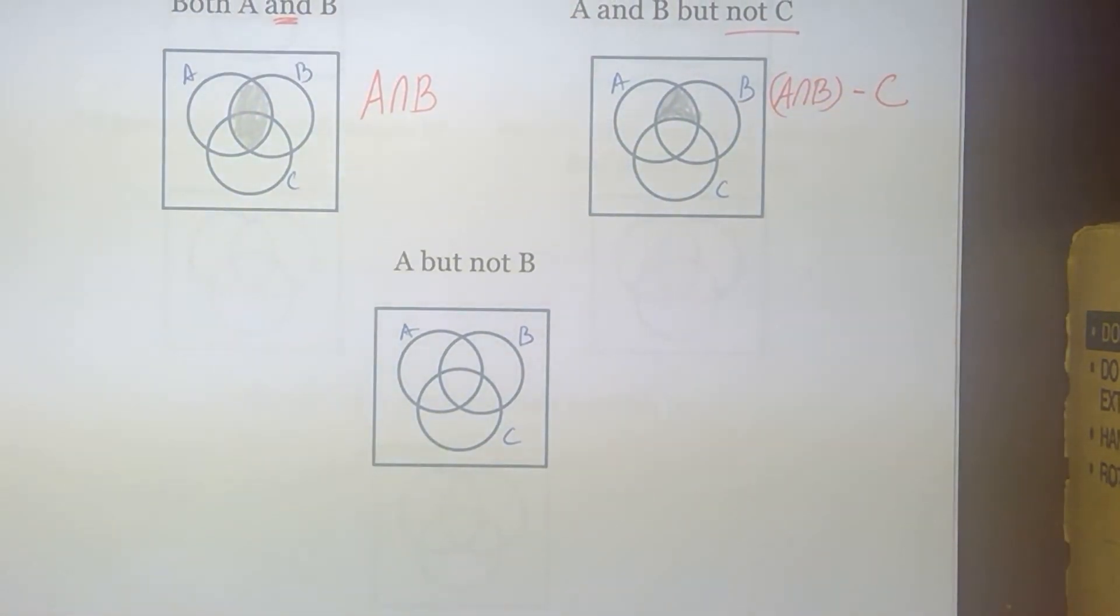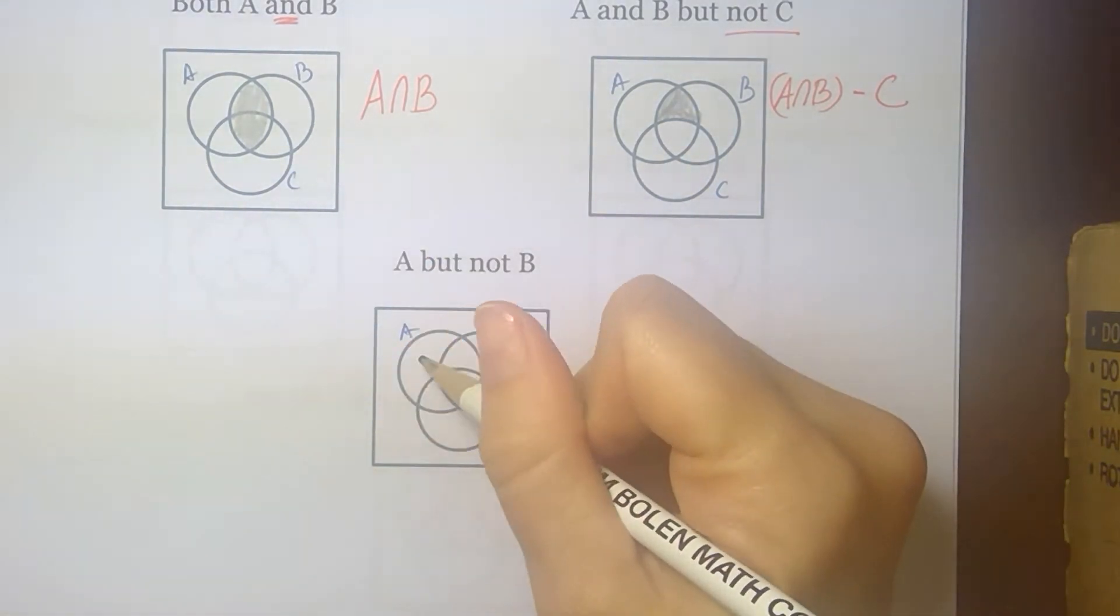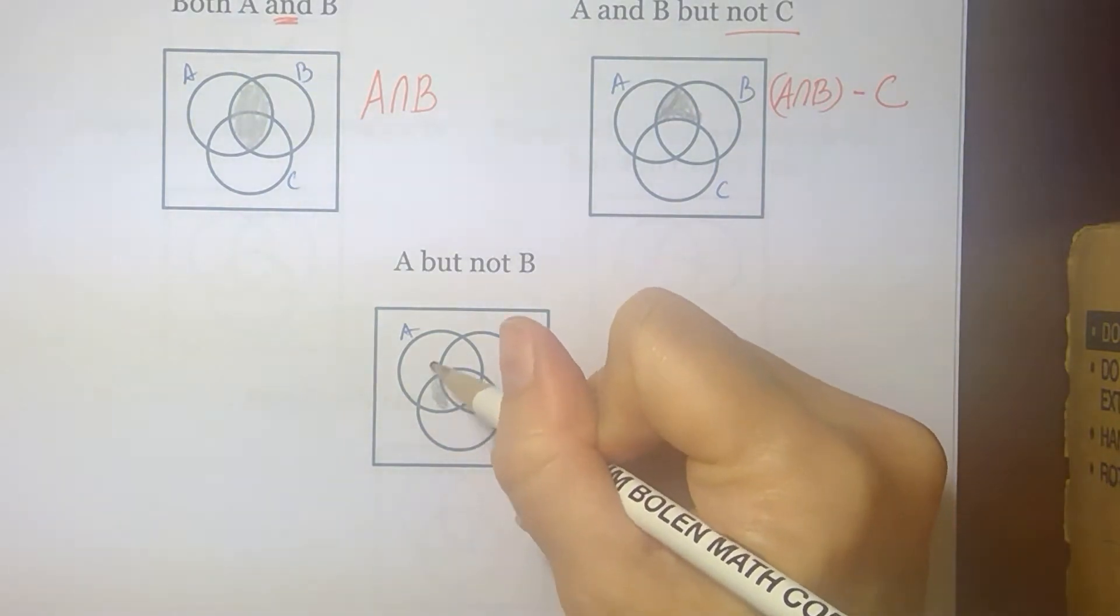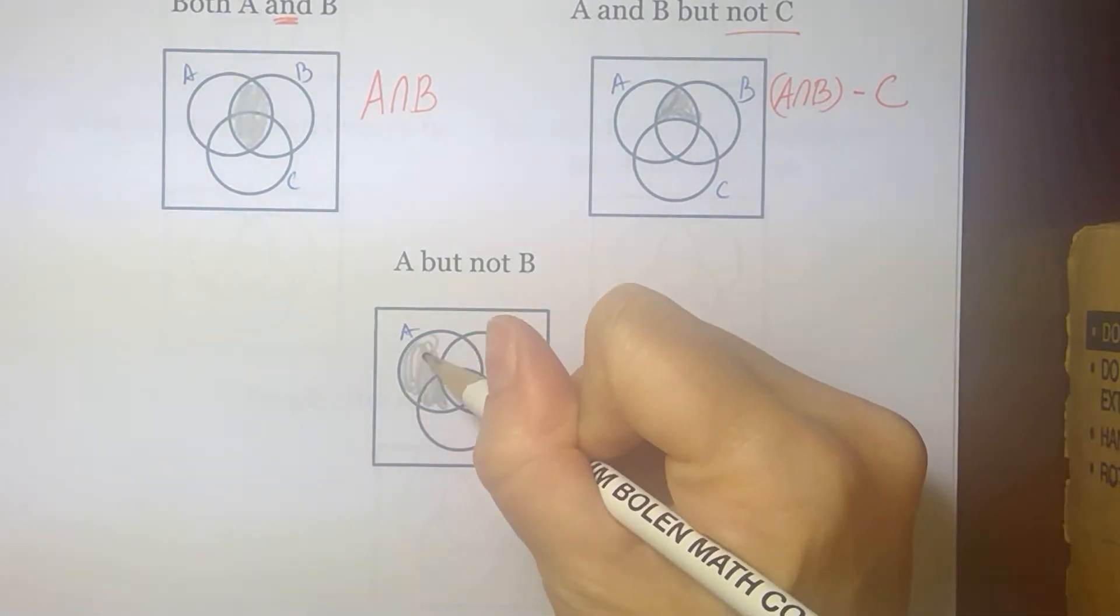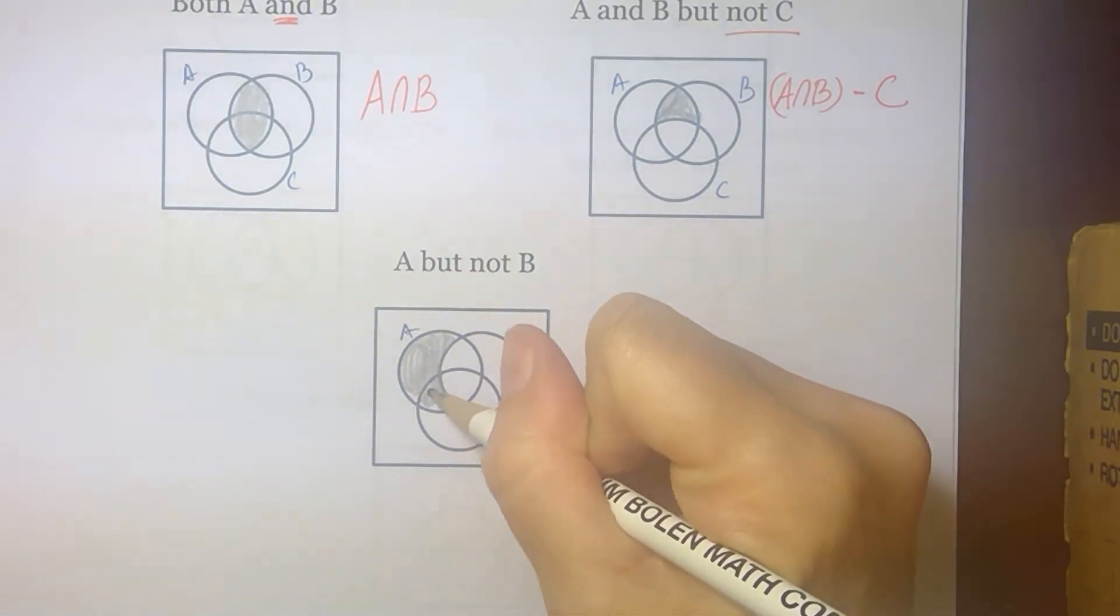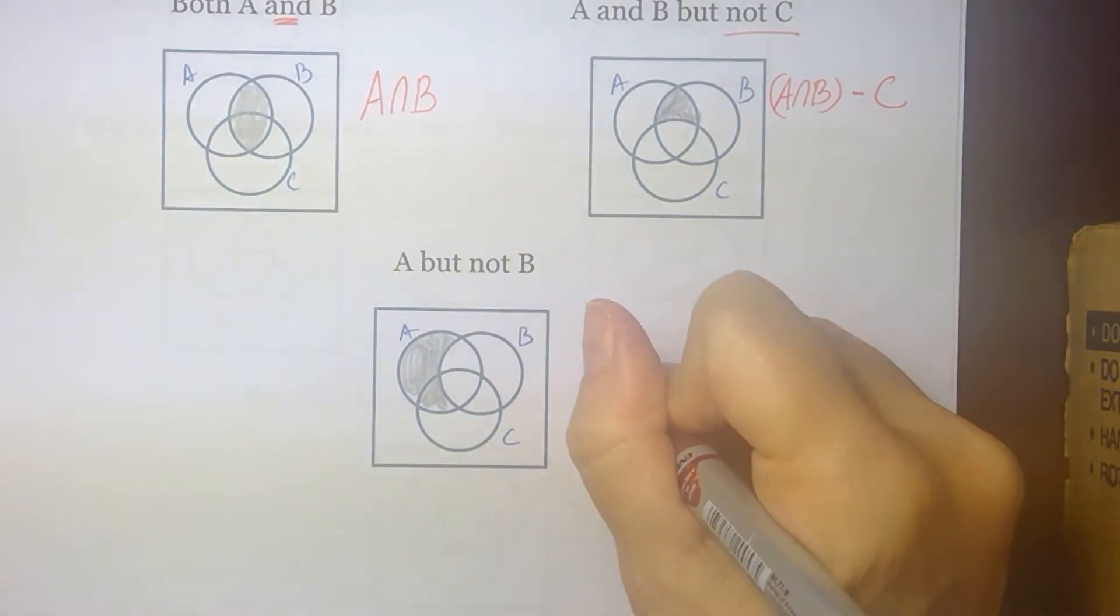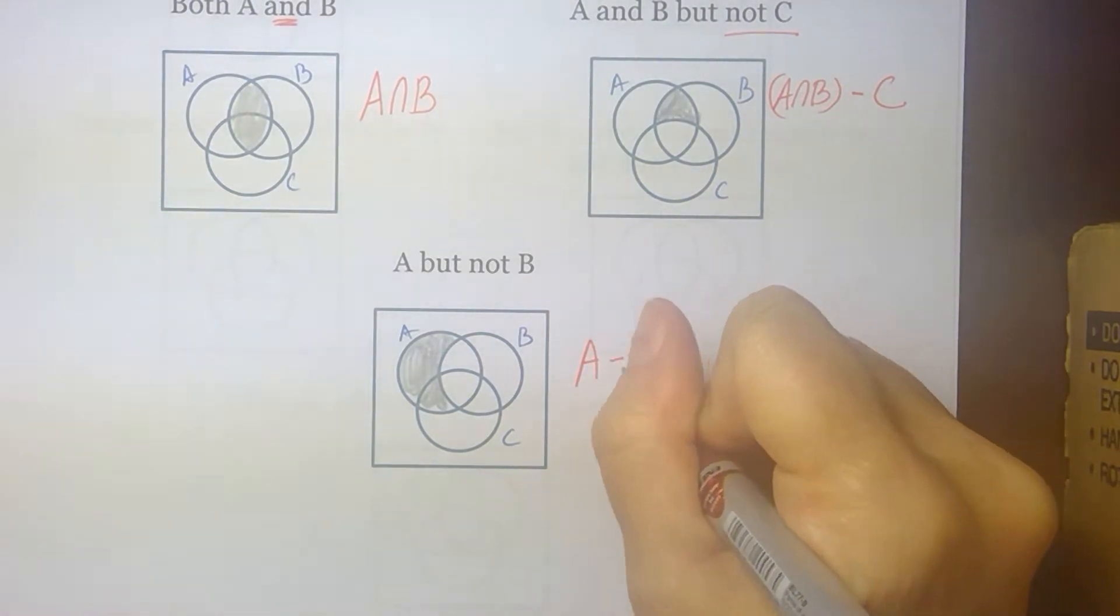And then our last one on this page, A, but not B. So I'm starting with A and then I'm taking out these two regions that are also part of B. So A, but not B includes region 1 and region 4. And the notation looks like A minus B.